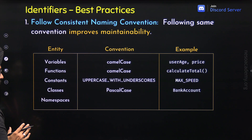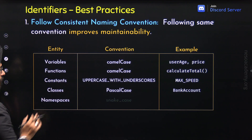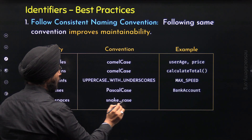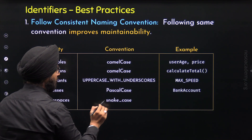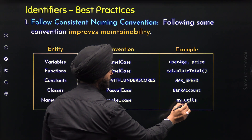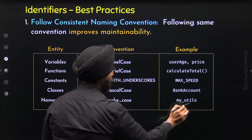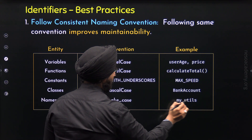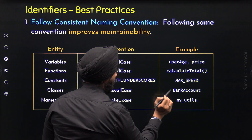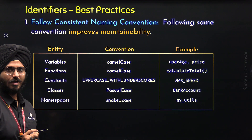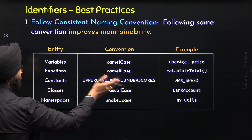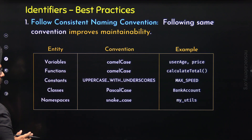Now here comes the fifth entity: namespaces. For namespaces, we can follow the snake case convention. In snake case convention, we have all lowercase letters and words are separated by underscores. For example, here we have this namespace my_utils. All letters are lowercase and the words are separated by an underscore.